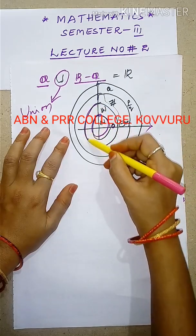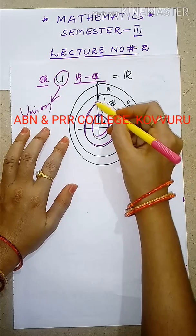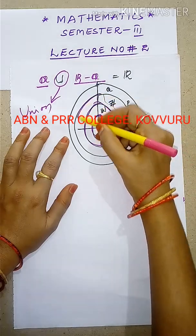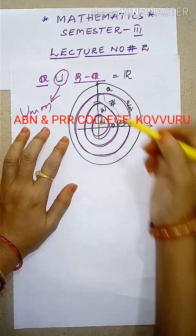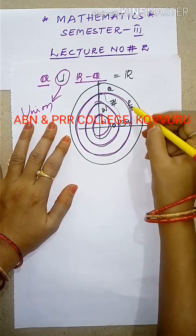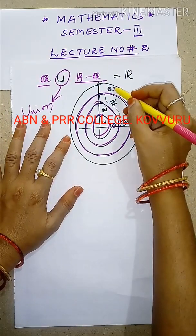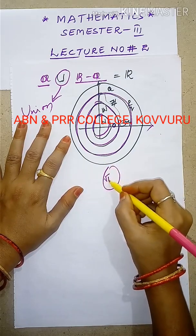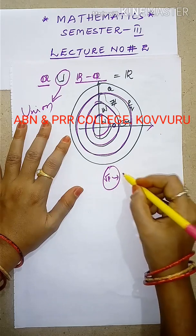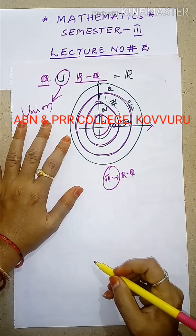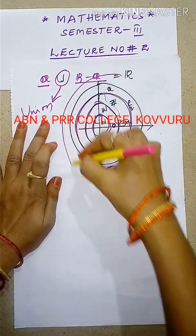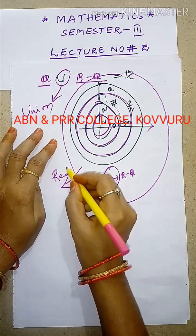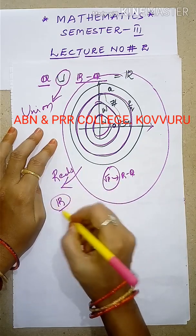Using a Venn diagram: the first circle represents natural numbers; adding zero gives the whole number set; adding negative numbers gives the integer set; the rational numbers set includes those; irrationals are separate. The total union of all these gives the set of reals, denoted by capital R.